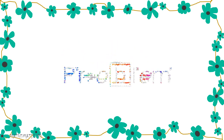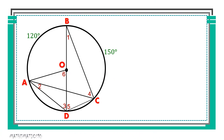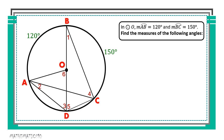Let us have our practice exercise to see if we can apply those theorems discussed. Given this illustration in circle O, the measure of arc AB is 120 degrees and the measure of arc BC is 150 degrees. Find the measures of the following angles. Let us first apply postulate 24 about diameter. Since we have diameter BD, this diameter divides the circle into two semicircles: semicircle BAD and semicircle BCD.